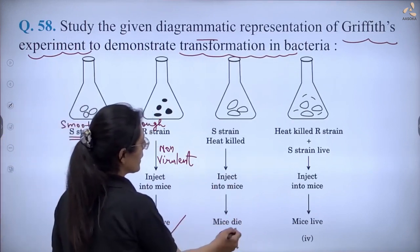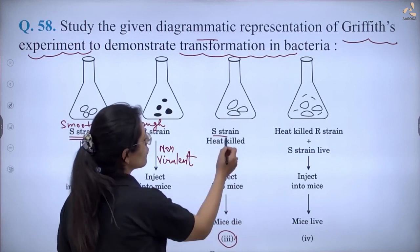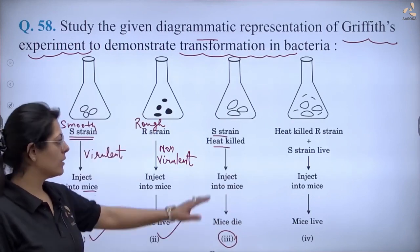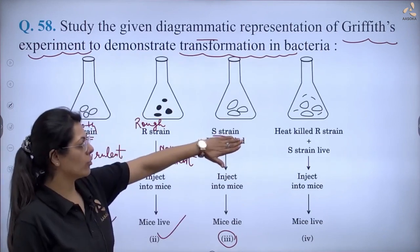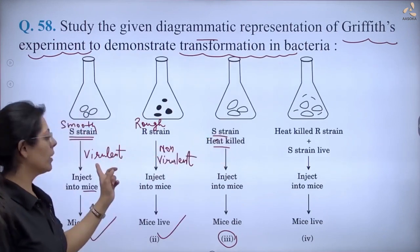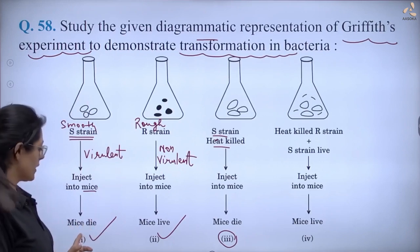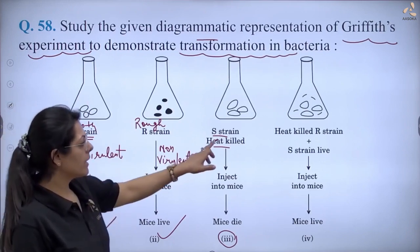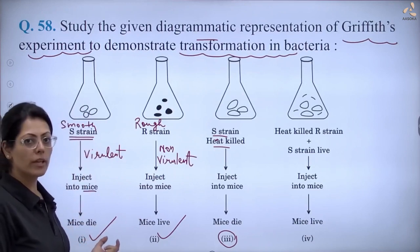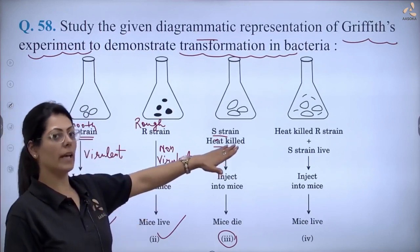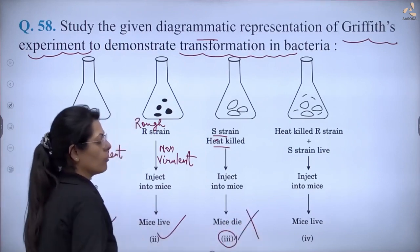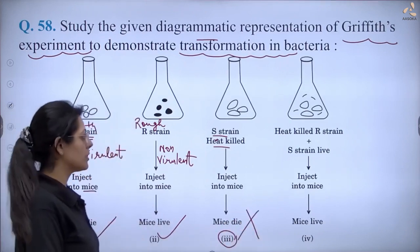What does the third option say? S strain which was heat-killed. Heat-killed means its genetic material is now inactivated. Actually, S strain was the virulent one, so in that case mice should have died. But now that it is heat-killed, the thing causing the death of the organism is now inactivated. So mice should not die here — mice should live here. So the third option is wrong.